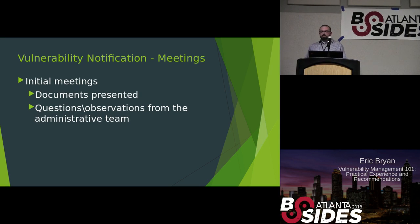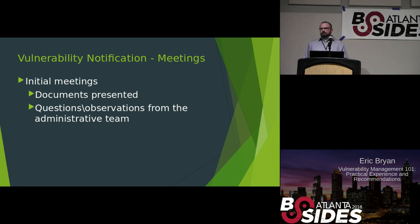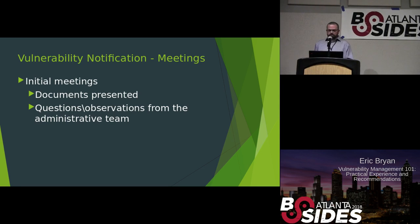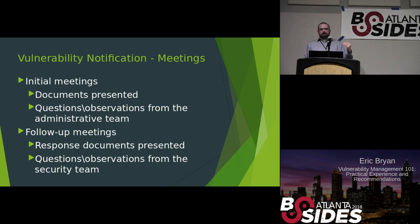Now that we assembled the reports, we scheduled team meetings — two meetings per team per month. We would meet, go over the documents, and involve the administrative team along with their manager and director. We found that the higher up we went, the more effective our program was, for obvious reasons. Then we would have a follow-up meeting two weeks later, where the team would update the documents with their planned course of action.